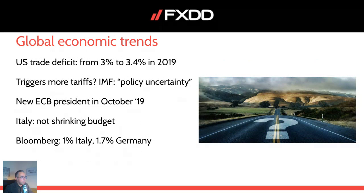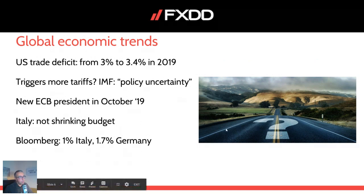The IMF is saying policy uncertainty is something that will impact potentially 2019. There will be a new ECB president in October 2019. Bloomberg is expecting 1% growth in Italy and 1.7% in Germany. So a lot of question marks — unknown unknowns and known unknowns — that could really be difficult for 2020. Maybe not 2019, or not the first 75% of it, but at the end, curious how that will play out.